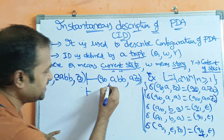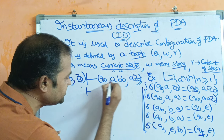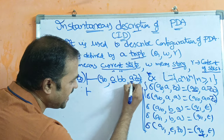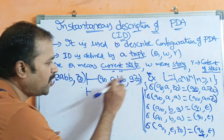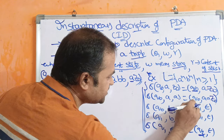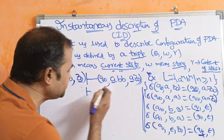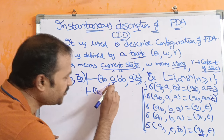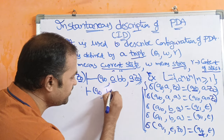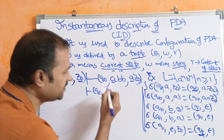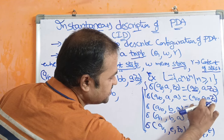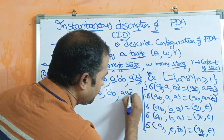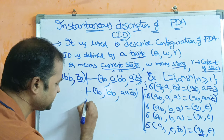Next, the current state is Q0, input symbol is A, and the stack's top symbol is A. So (Q0, AA) means the next state is Q0, this A is processed, the remaining string is BB, and the content of the stack is now AAZ0.